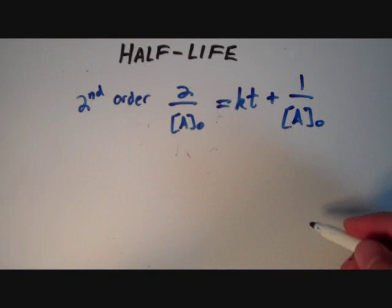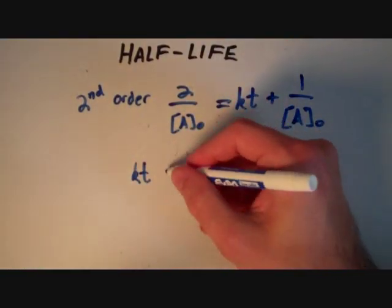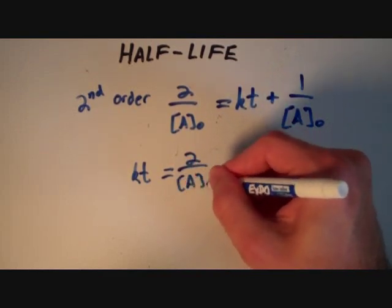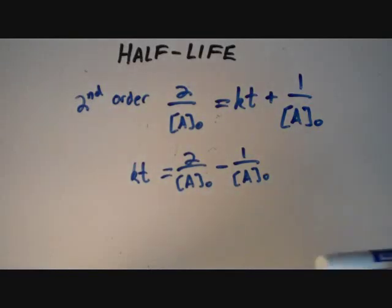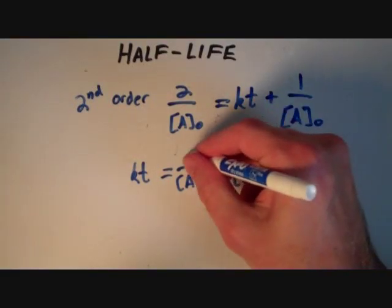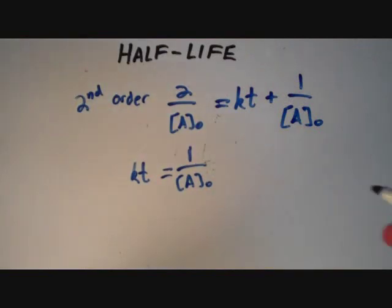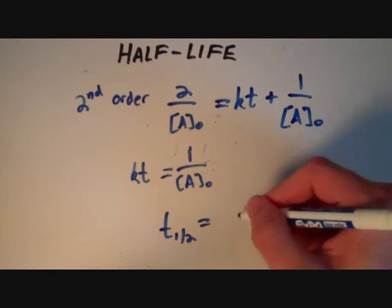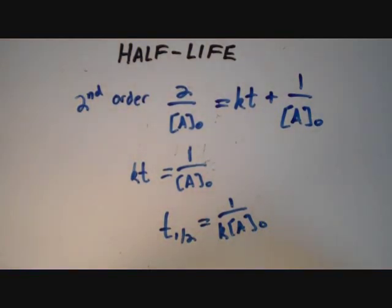Now we'd like to solve for T. Subtracting both sides by one over the initial concentration, we get kT equals 2 over the initial concentration minus one over the initial concentration. Since the denominators are the same, we subtract the numerators: 2 minus 1 equals 1, so kT equals one over the initial concentration. Dividing both sides by k, the half-life T½ equals one over k times the initial concentration. This is the expression for half-life for a second-order reaction.